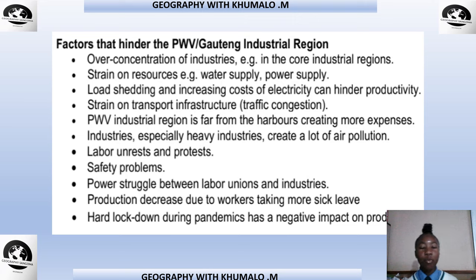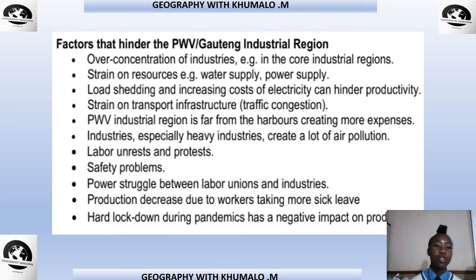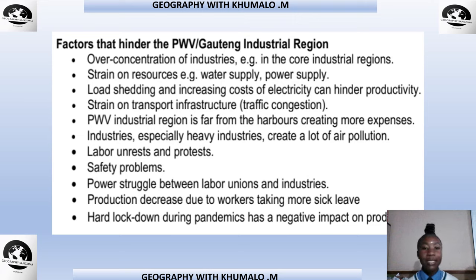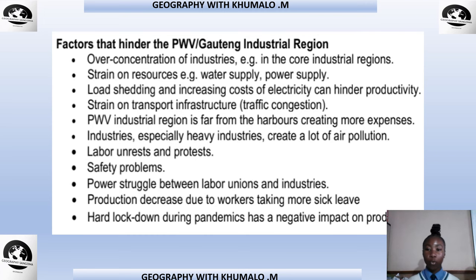The PWV industrial region is far from the harbors, creating more transport expenses. Heavy industries create a lot of air pollution. Additionally, labor unrest and protests, safety problems, power struggles between labor unions and industries, production decrease due to workers taking more sick leave, and the hard lockdown during the pandemic have all had a negative impact on productivity.